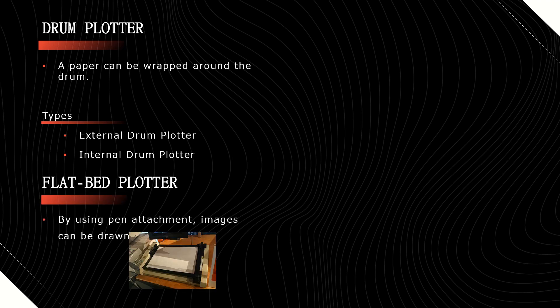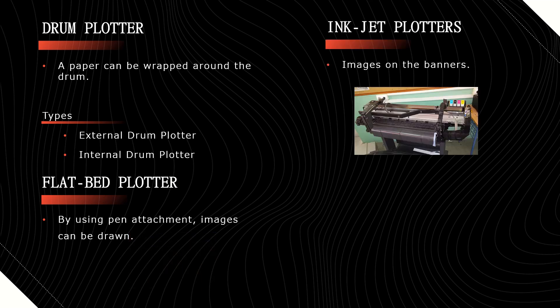Flatbed plotter: in this, the paper is fixed constantly on a horizontal plane. A pen attached to it is used to draw images by moving horizontally and vertically. The pen can have different colors as well. Inkjet plotters are especially used to print images on banners which are placed along the roadsides.